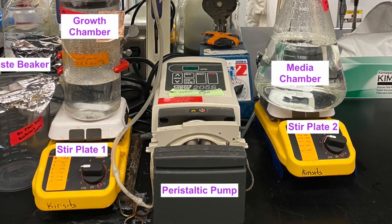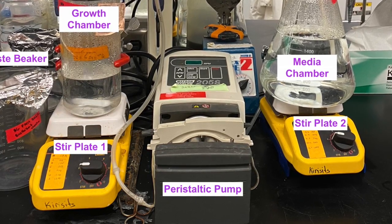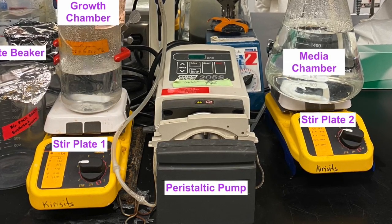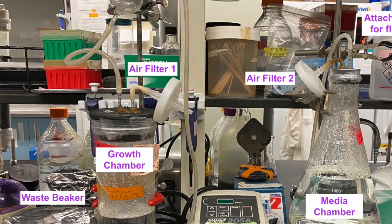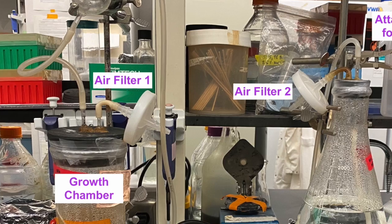A peristaltic pump is used to initiate flow from the media chamber into the growth chamber. We can control the direction, whether it's counterclockwise or clockwise flow, and we can control the speed of the flow with this pump. The air filter is connected to the tops of both the growth chamber and the media chamber.